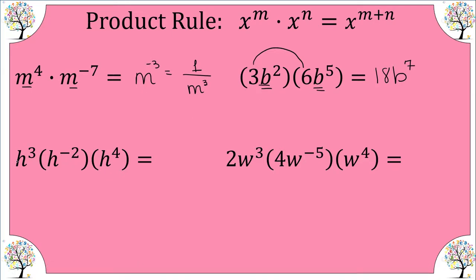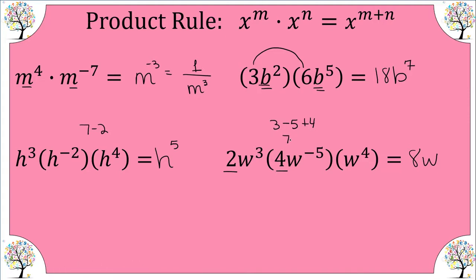Our third example: h to the third times h to the negative two times h to the fourth. We have a base of h, so we add three, negative two, and four. Three and four gives me seven, minus two gives me five — so h to the fifth. Our last example here: the coefficient is two times four, which is eight, and the base is w with exponents three plus negative five plus four. Three and four is seven, minus five gives a power of two.